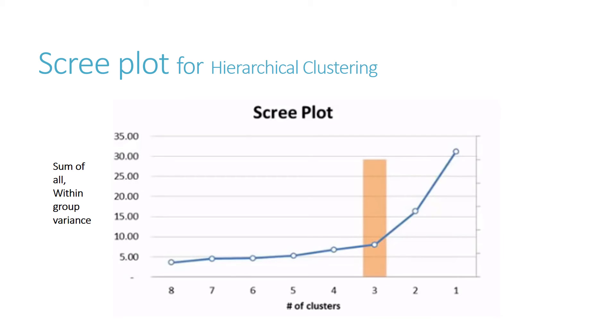Coming to the scree plot which helps in hierarchical clustering is given below. Here a plot of number of clusters and sum of within cluster variance is mentioned, which helps in hierarchical clustering. If there is just one cluster, the variance is 32. If two clusters are formed, then the total variance will reduce to 16, and so on. At total cluster 3, we get the elbow point, which tells us the optimum number of clusters we should take.